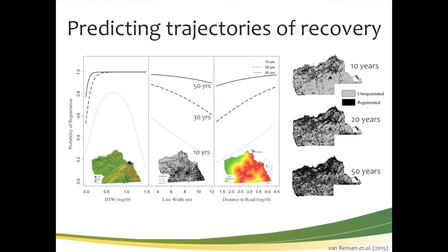The important part is that these relationships allow us to extrapolate and predict spatial and temporal recovery across the landscape. With the original Stony Mountain area, this sensitivity model shows the type of habitats likely to recover or not recover at different points in time — 10, 20, and 50 years — with darker areas representing habitats able to reach the 3-meter recovery rule. There are strong relationships that predict the factors affecting recovery of 2D seismic lines.